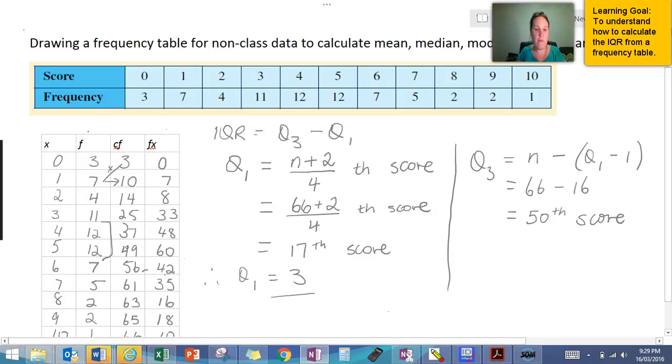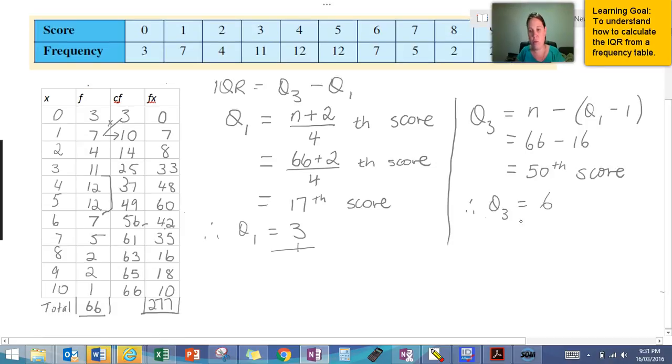Well 50 is greater than 49, which means that it has to be after 5. Well, the next value after 5 is 6, and it is less than 56, so therefore Q3 is going to be equal to 6.